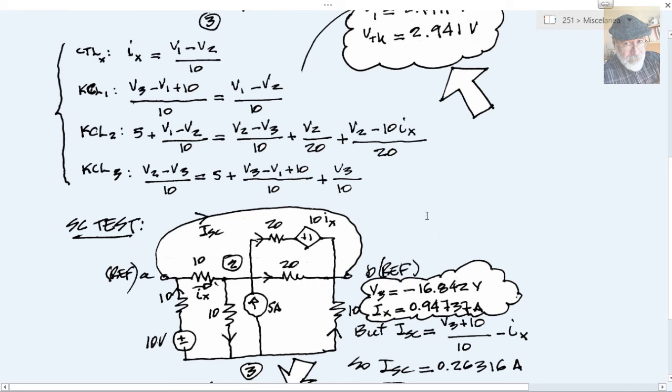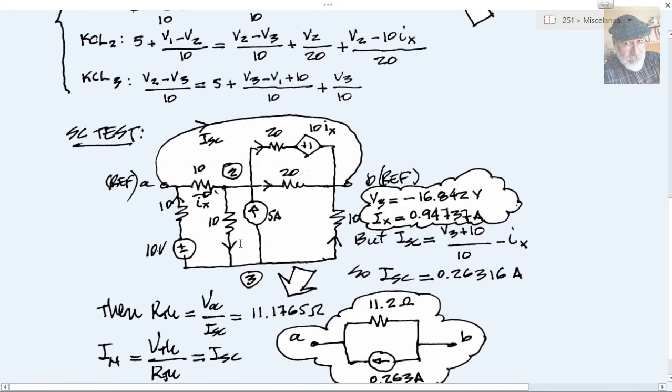And what do we need? The short circuit current, that is what we need of the short circuit test, happens to be this vertical current minus Ix going to the right. If we compute this vertical current and Ix we can compute I_short circuit. But this vertical current is V3 minus zero, the voltage of the reference, plus 10 divided by 10. I_short circuit is V3 plus 10 divided by 10 minus Ix.